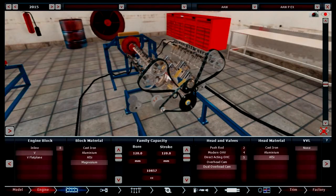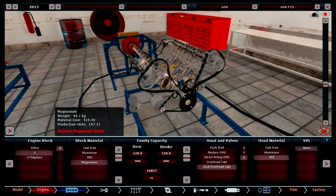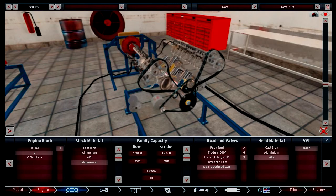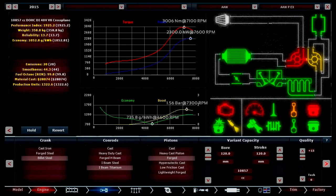And we're also using a flat plane V8 with a magnesium block, 10 litre, dual overhead cam, 5 valve piston. And this all delivers about 2300kW at 7600rpm.